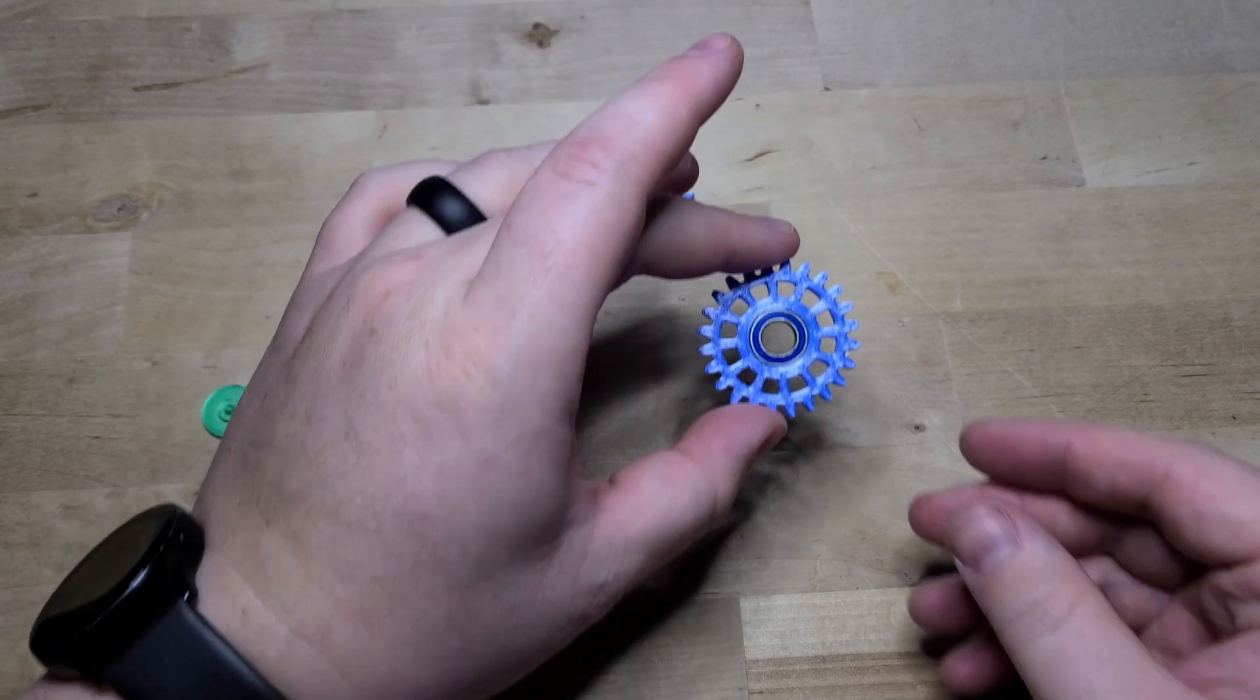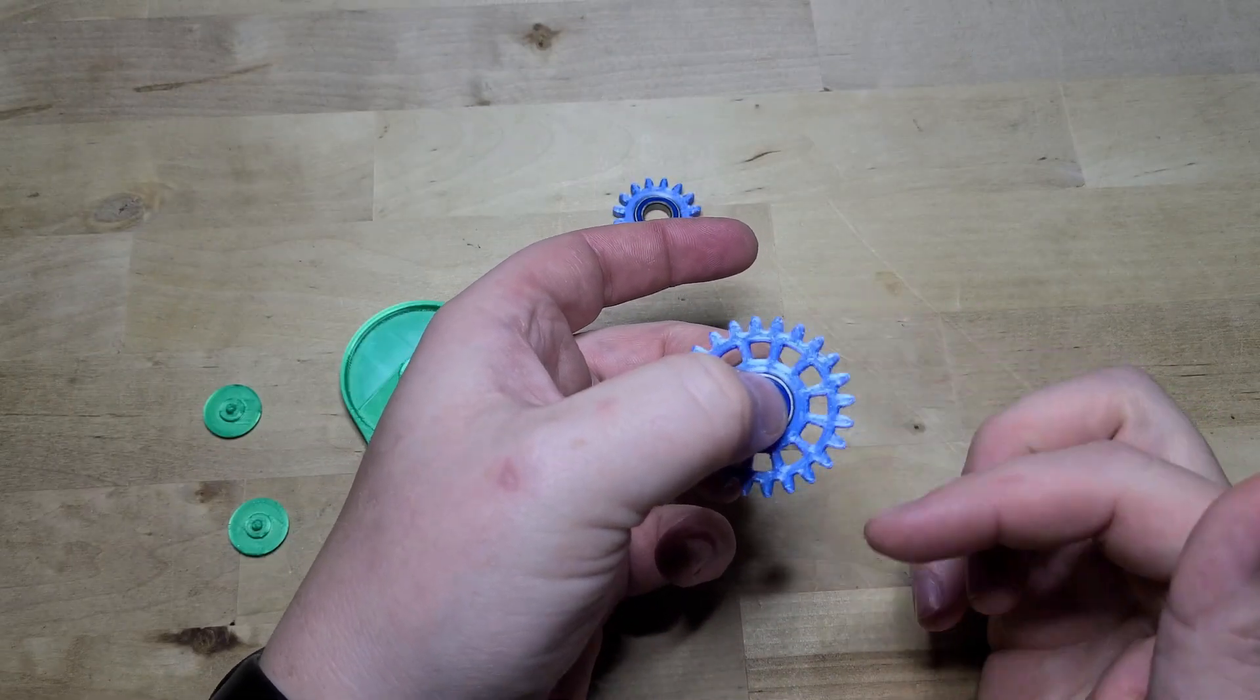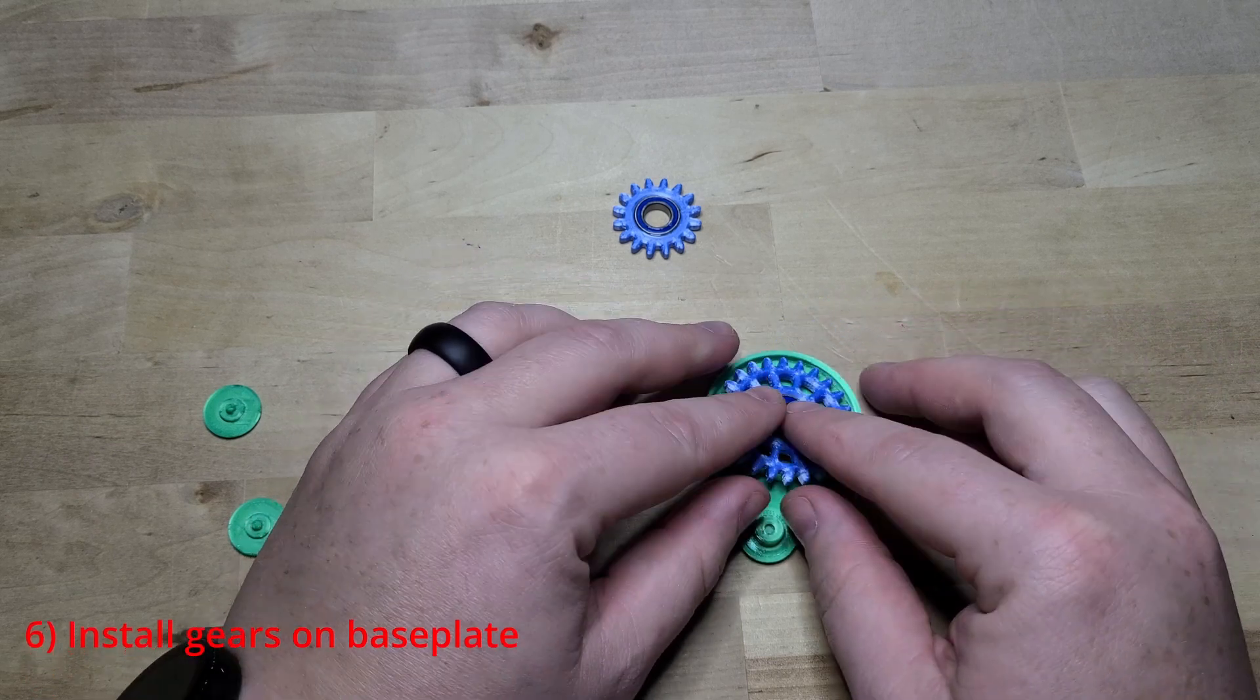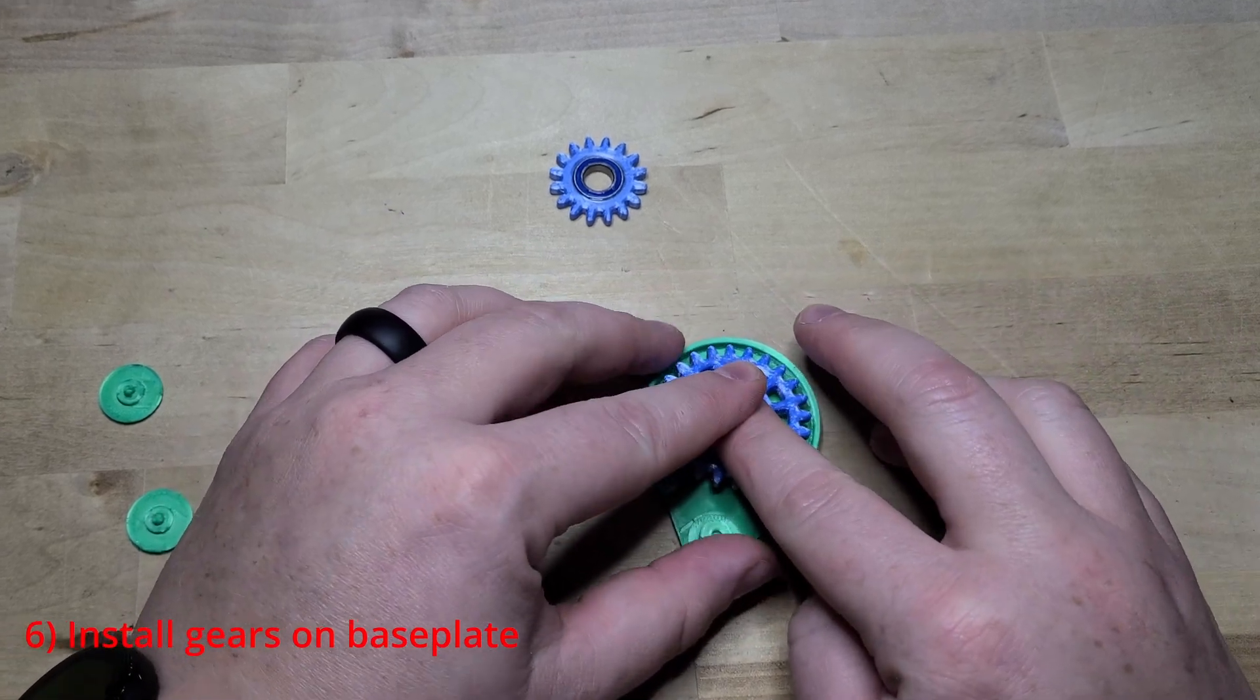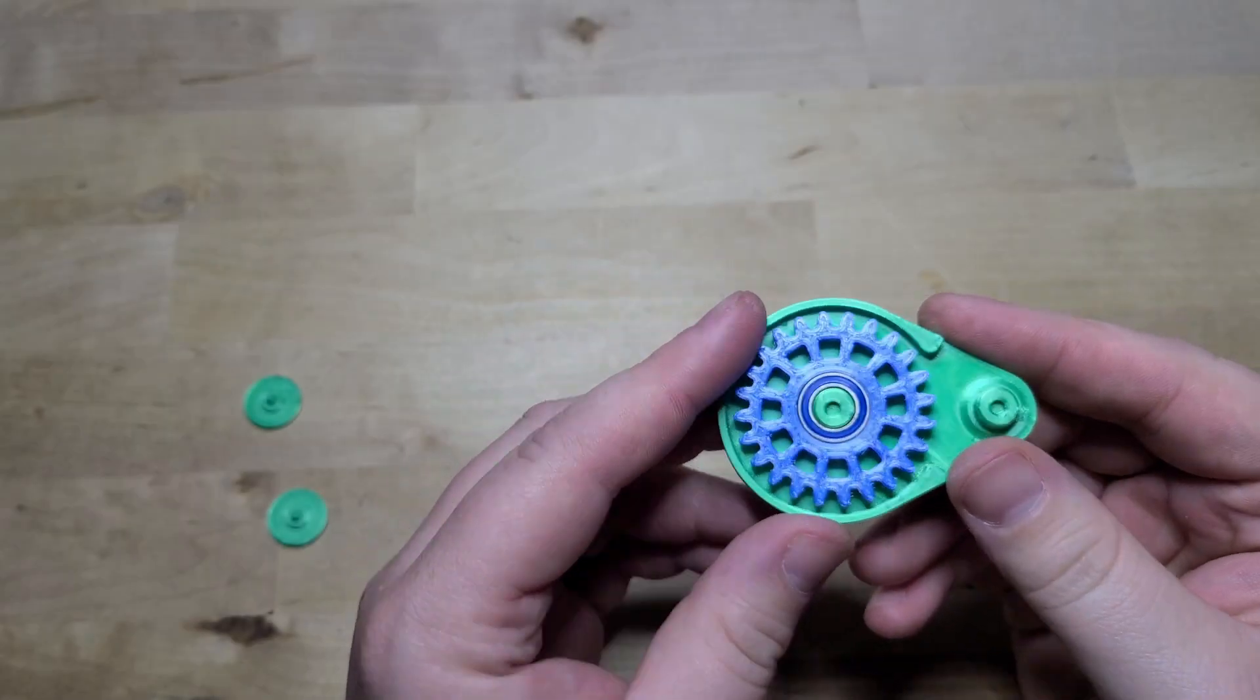Now we test the bearing to make sure the glue hasn't caused it to seize, and install it on the base plate. Test that the bearing spins freely on the base plate.